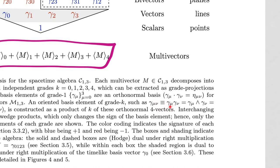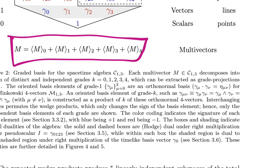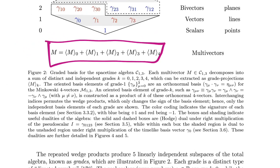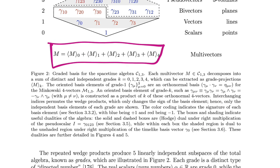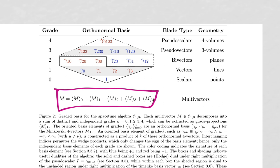Interchanging indices permutes the wedge products, which only changes the sign of the basis element. Hence only the independent basis elements of each grade are shown — for example, gamma_32 is not independent of gamma_23, so it's not on the list. The color coding indicates the signature of each element: blue for plus-one, red for minus-one. The bivectors are self-dual, and there are also dualities between vectors and trivectors and between scalars and pseudoscalars.